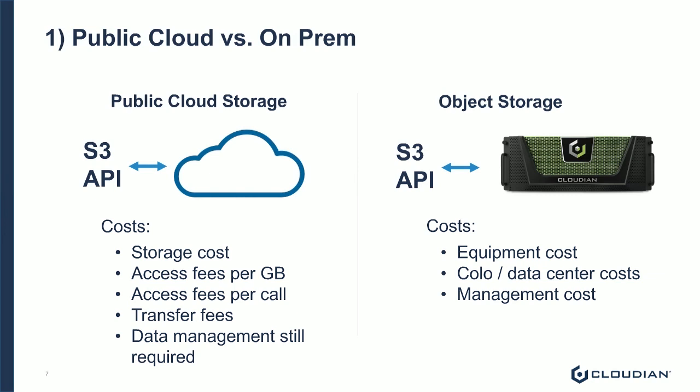Let's start with public cloud, because this is obviously one a lot of people are interested in right now. The move to the public cloud is very real and has some very compelling benefits in flexibility — you can get storage capacity on demand. But from a cost perspective, I think people sometimes don't factor in all the costs associated with that move. You're dealing with a storage cost, but in addition to that, you're dealing with access fees per gigabyte, access fees per each call, and transfer fees for going between clouds.